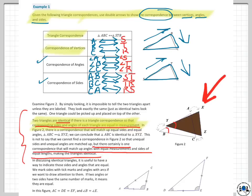It'll probably become clear later on. So in discussing identical triangles, it is useful to have a way to indicate those sides and angles that are equal. We mark sides, and here's some of our notation here. We mark sides with tick marks and angles with arcs if we want to draw attention to them. If two angles or two sides have the same number of marks, it means they are equal.